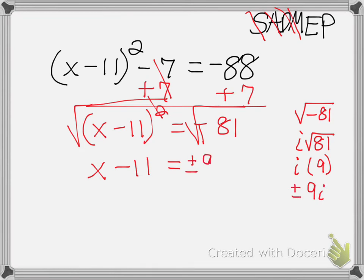So it's going to equal plus or minus 9i. And then I'll separate it. x minus 11 equals positive 9i, and x minus 11 equals negative 9i. And then I'll solve for x. In order to solve for x, I have to add 11 on both sides.